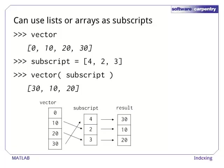For example, here's our four-element vector again, and a list with three legal subscripts: 4, 2, and 3. The expression vector(subscript) gives a new array whose elements are selected from vector, as you'd expect.